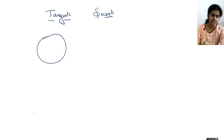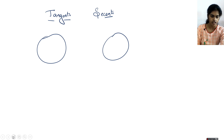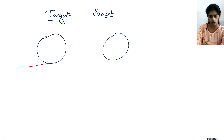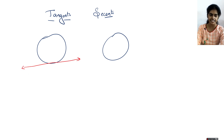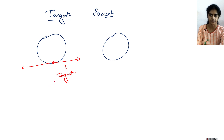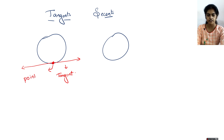If you have a circle and you draw a line which touches the circle at a single point, such a line is called a tangent. If you are drawing a line which touches a circle at a single point, then that line is called a tangent. And this point where the line is touching the circle is called the point of tangency.